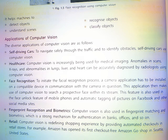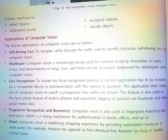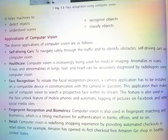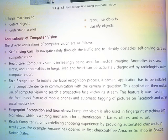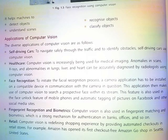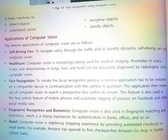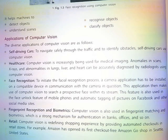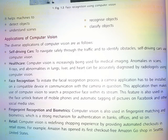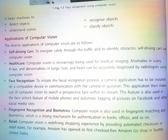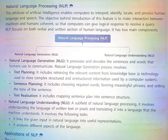Fingerprint and Biometrics: Computer vision is also used in fingerprint matching and biometrics, which is a strong mechanism for authentication in banks, offices, and so on. Retail: Computer vision is redefining the shopping experience by providing automated checkouts in retail stores. For example, Amazon has opened its first checkout-free Amazon Go shop in Seattle, United States.